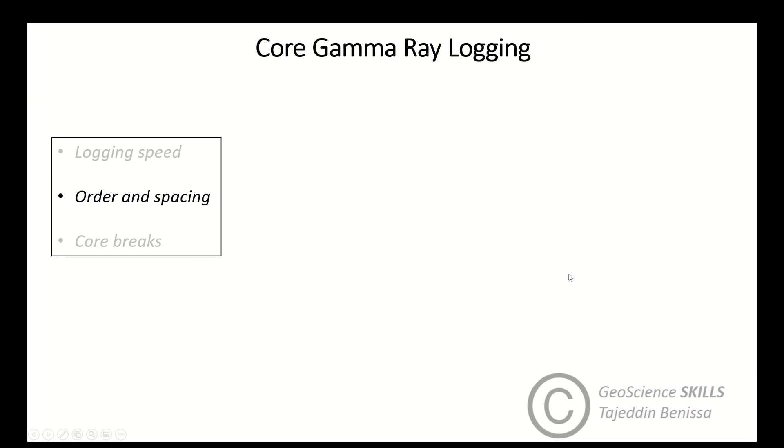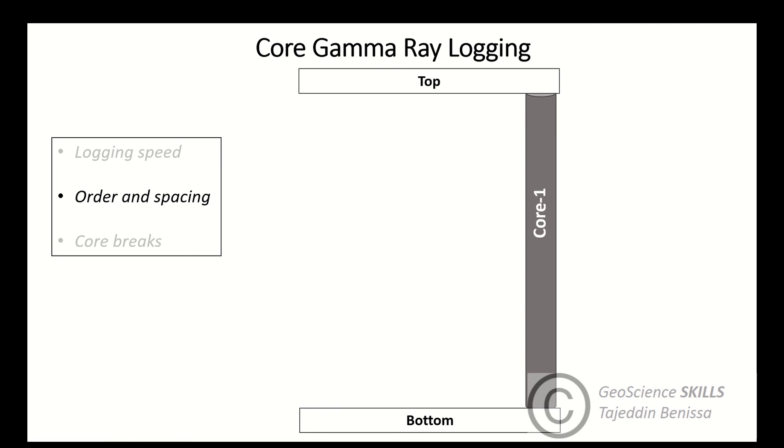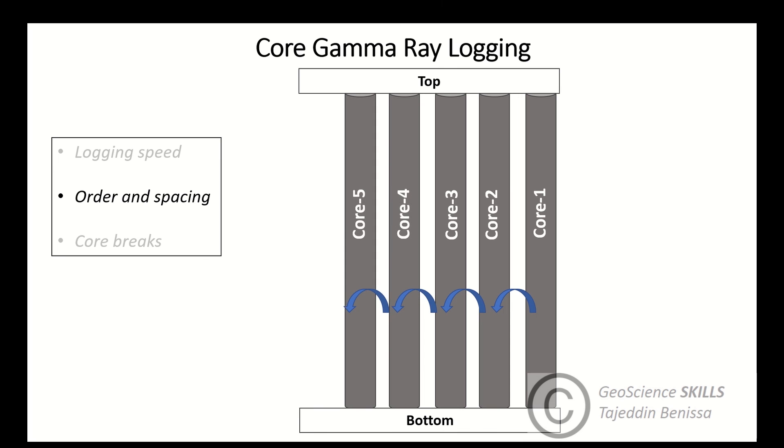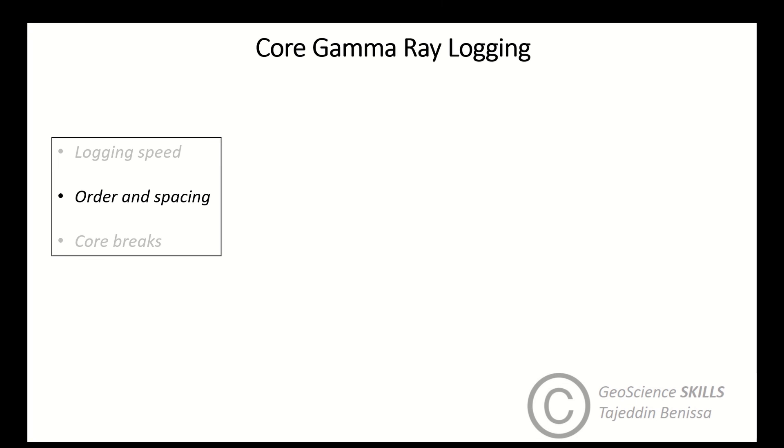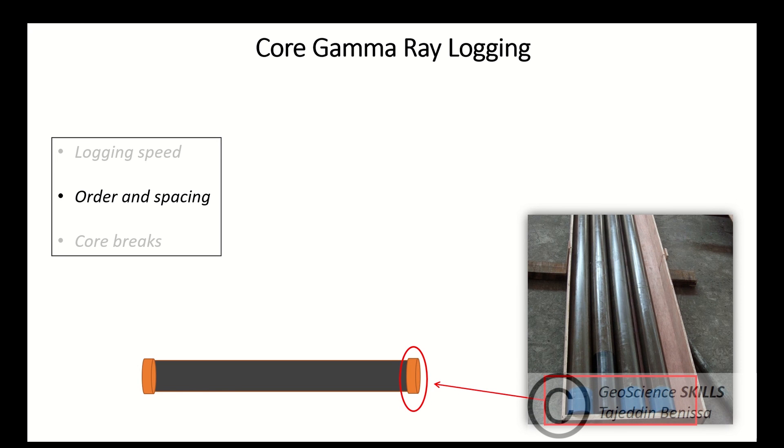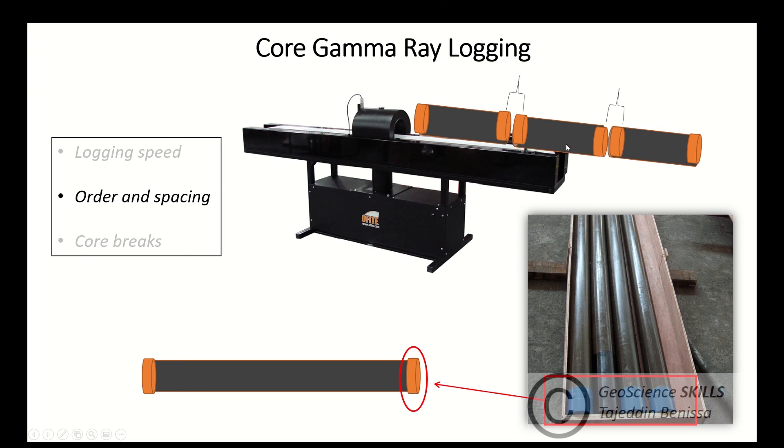For core order, cores should be laid out from bottom to top before running gamma ray scanning to avoid issues of log turnover we spoke about earlier. In addition to that, spacing: the technician must mind the covers of the core tubes that we see here in this picture. These cause space between the core intervals when placed on the instrument platform, so they should be considered during logging to avoid false data or extra spaces in the output log.